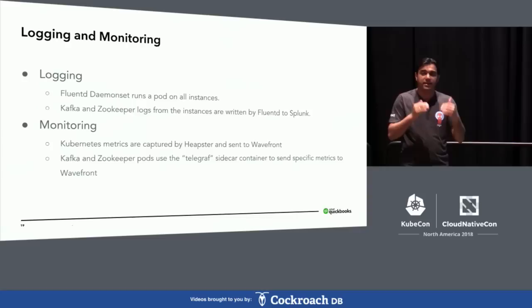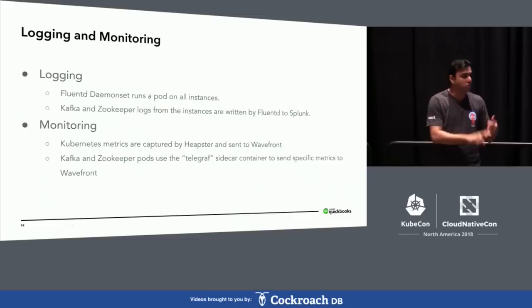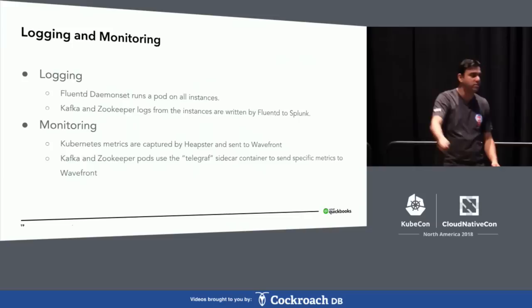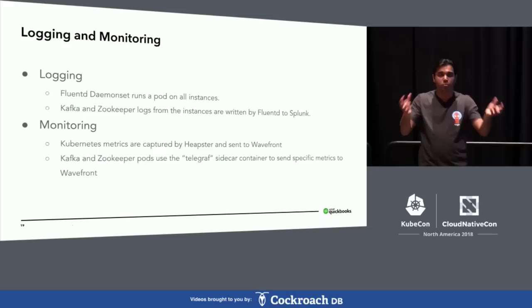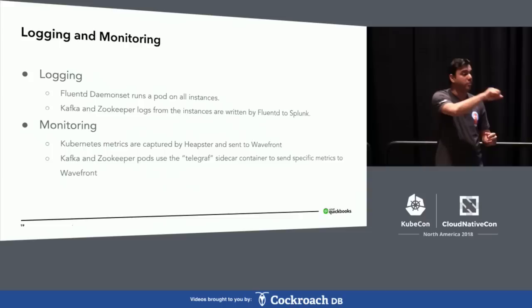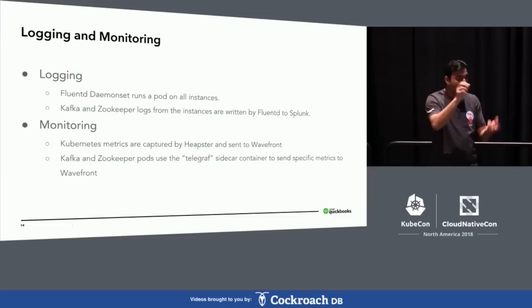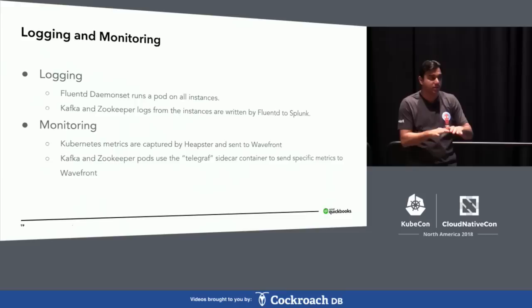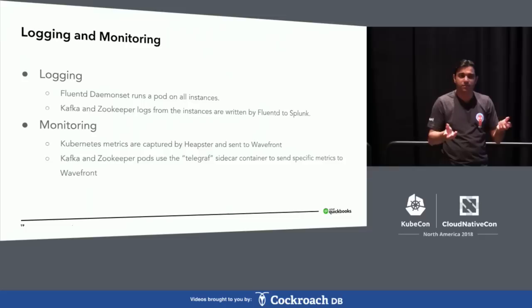Metrics were collected at two levels. Cluster-level metrics — node count, memory and CPU utilization, disk space — were collected by Heapster and shipped to Wavefront. For application-specific metrics — leader elections, replication latency between brokers, GC time — we used Telegraph running as a sidecar container to each broker, collecting JMX metrics from Kafka and sending them to Wavefront.